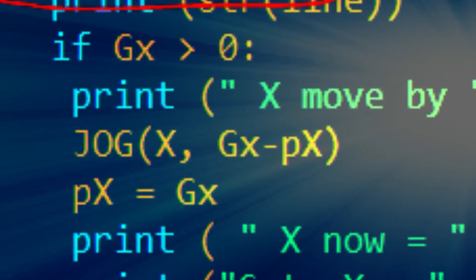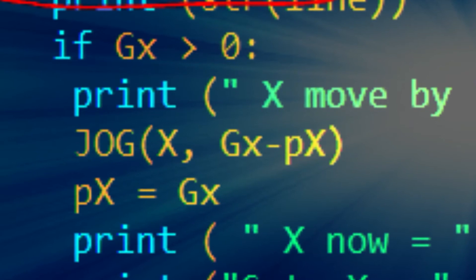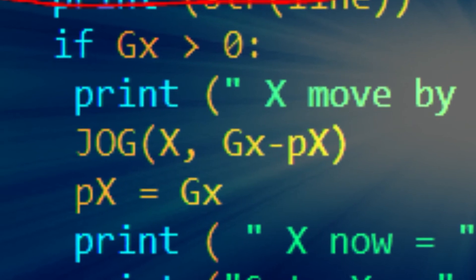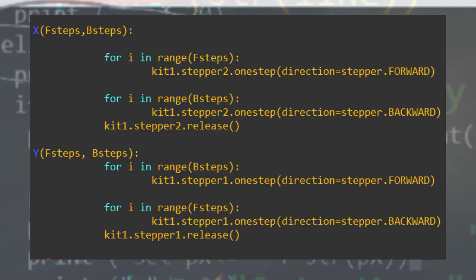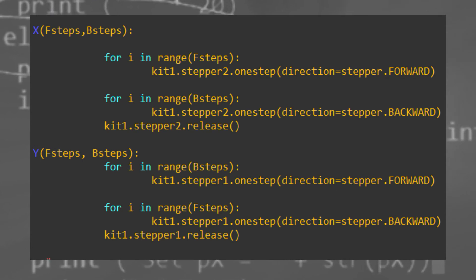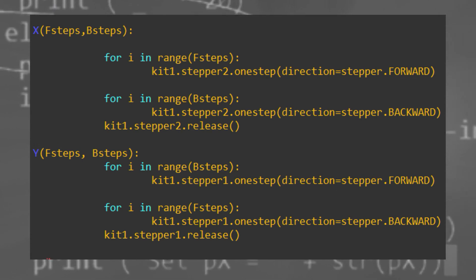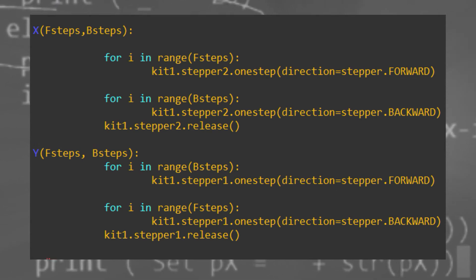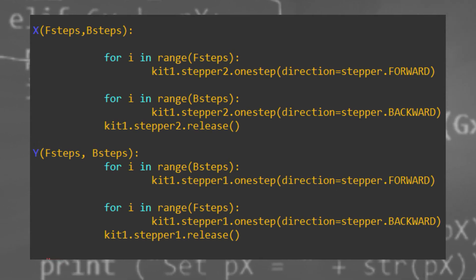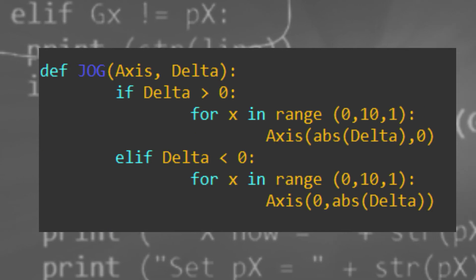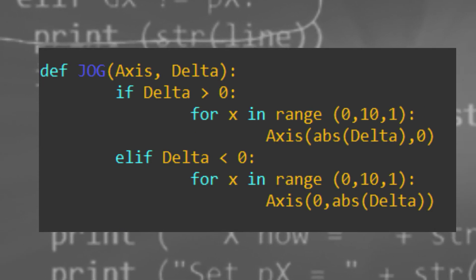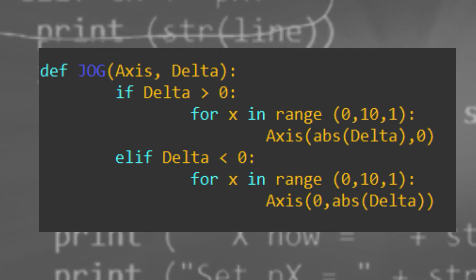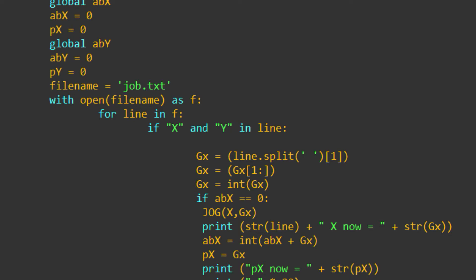So you can see I had the functions which were X and Y, which were basically talking to the hat. The jog function, which takes two parameters, which were the distance and the direction. And then the LIFR function, which is the main function, which does all the work.